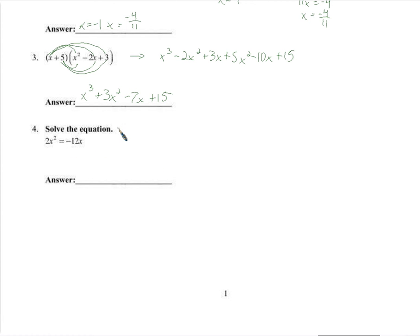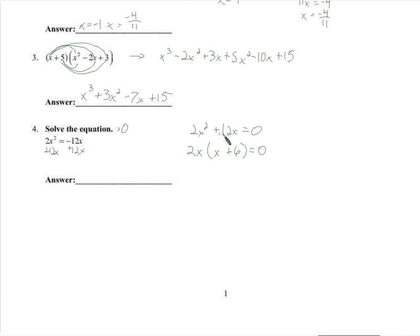Solve this equation. Remember that something equaling 0 is very important in solving these polynomial equations, so we add 12x to both sides and we get 2x squared plus 12x equals 0. Then we factor the left side. Job number one in factoring is finding if they have any factors in common and taking out the largest one. The largest factor they have in common is 2x, which leaves us with x plus 6. Either 2x is 0 — so x is 0 — or x is negative 6.